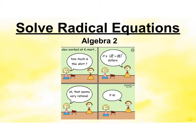Let's learn how to solve radical equations. Here is our joke. Alex worked at Kmart. How much is this shirt? It's the square root of 2 plus the square root of 8, whole thing squared, dollars. That seems very rational. See if you can figure that out and I'll tell you at the end.